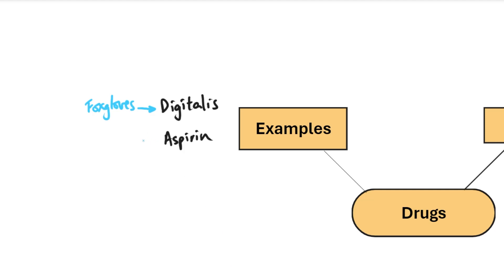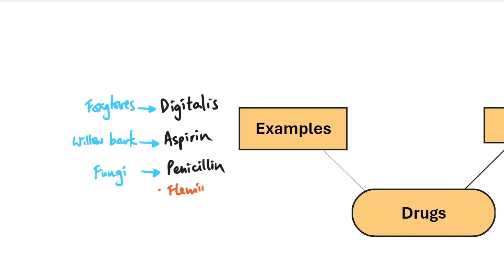Aspirin is a painkiller that deals with symptoms only and comes from willow tree bark. The third is penicillin — an antibiotic that comes from fungi, first discovered by Alexander Fleming. However, Fleming didn't mass-produce it; that was done by two other scientists, Florey and Chain, who conducted drug trials to develop and mass-produce penicillin, working with Pfizer in time for the World Wars.